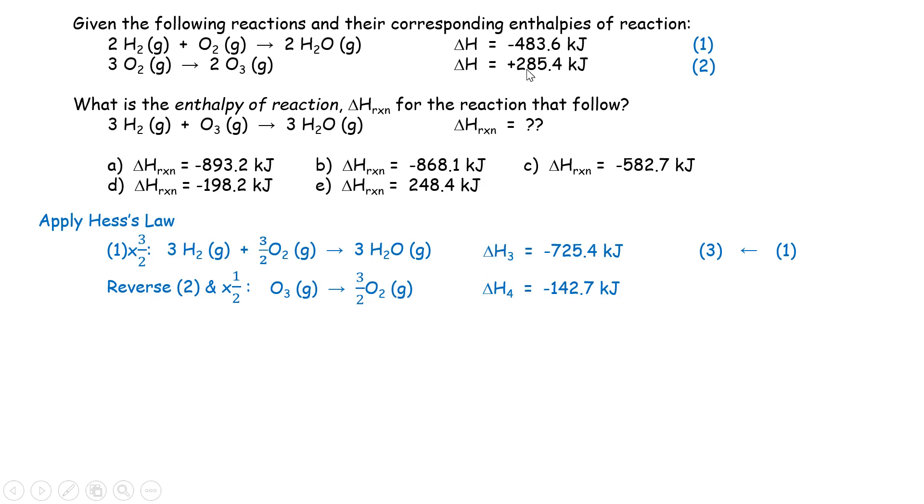And the absolute value of 285.4 multiplied by one half or divided by two should be 142.7. This negative sign is due to reversing the reaction, the direction of the reaction. This is from equation 2, so now we call that equation 4. Finally, we are closer to wrapping up the solution. If we add equation 3 and 4, then the sum of that addition would give us this target equation. Let's do that.